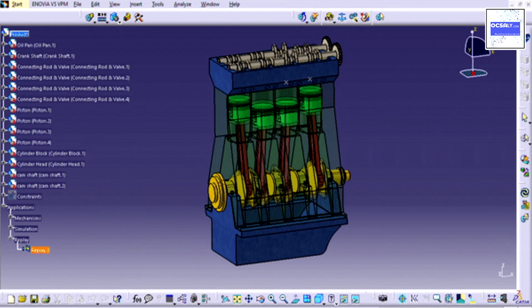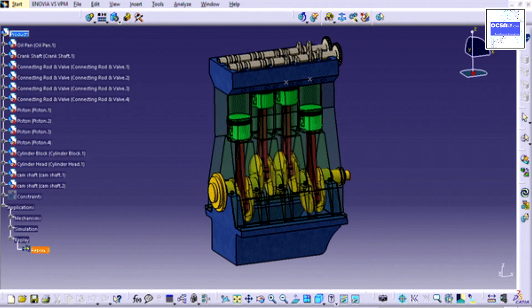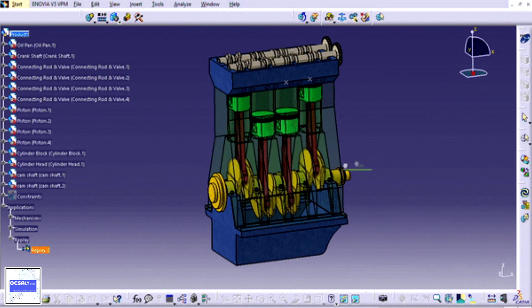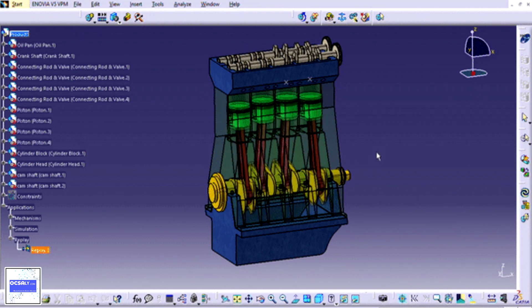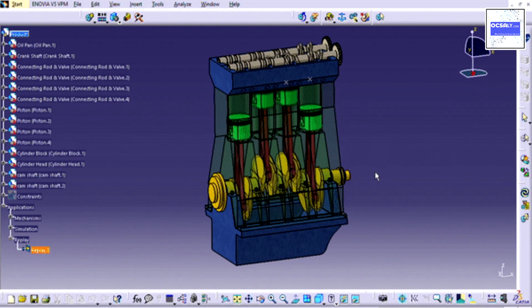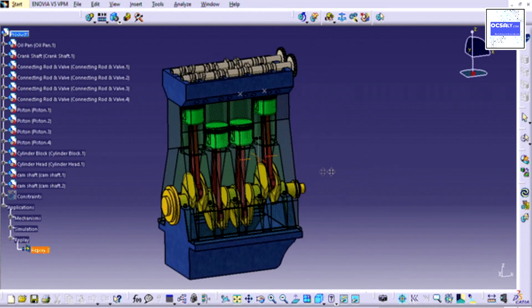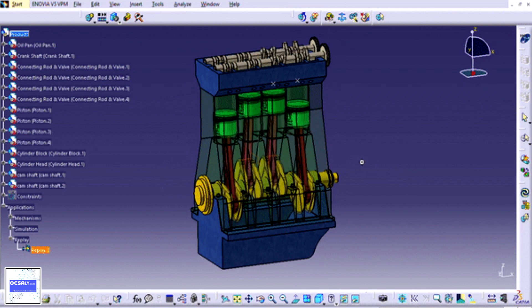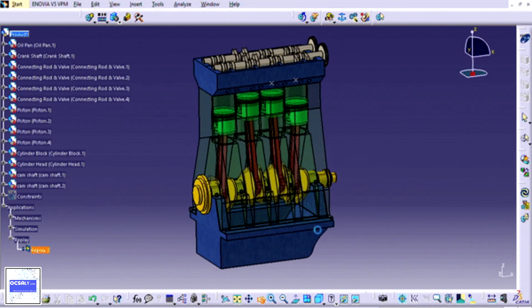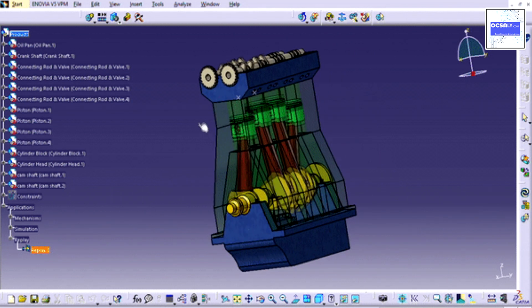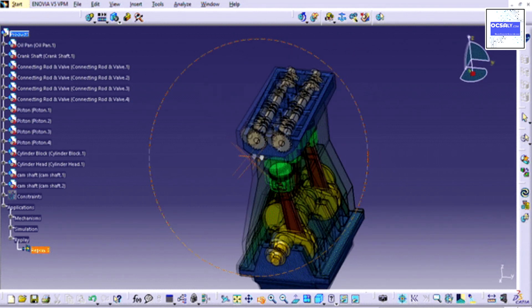In this stroke, the intake valve must be in the open position while the piston draws an air-fuel mixture into the cylinder by producing vacuum pressure into the cylinder through its downward motion. The piston is moving down as air is being sucked in by the downward motion against the piston.